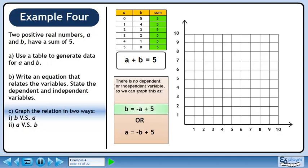Let's graph B equals minus A plus 5 first. We'll label the x-axis A. We'll label the y-axis B.